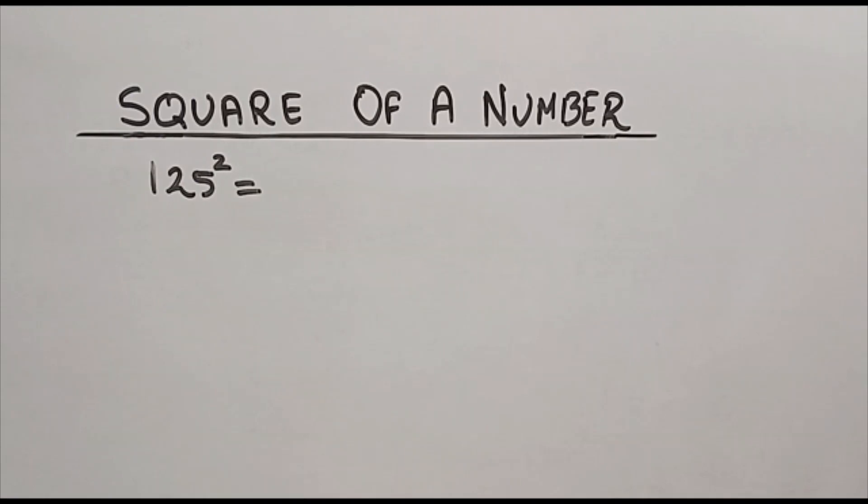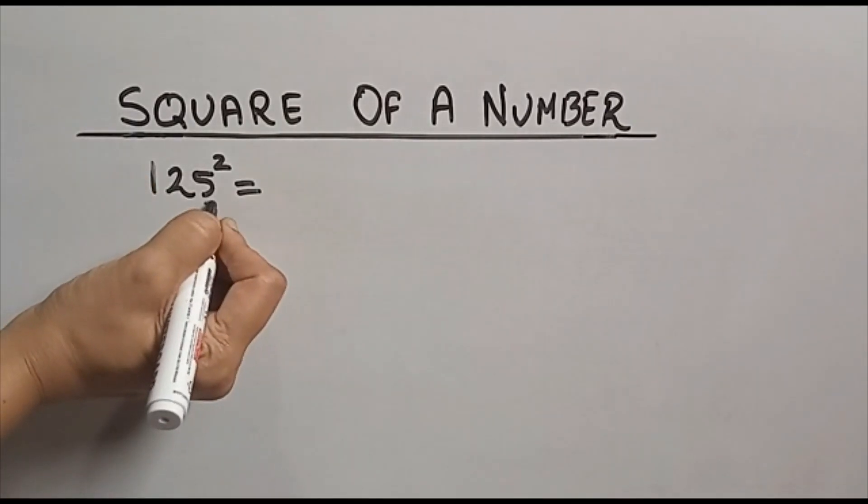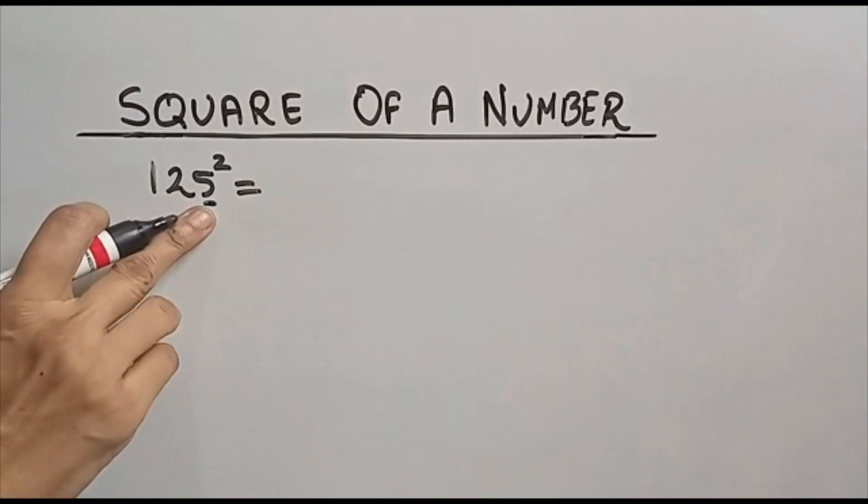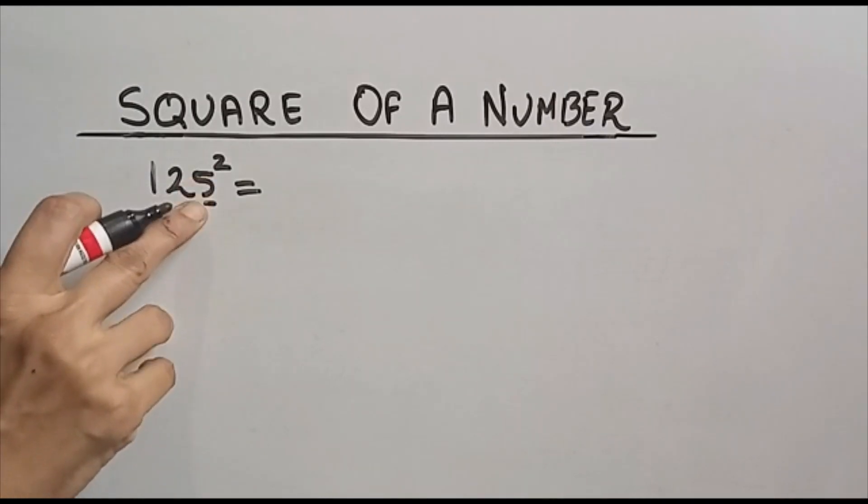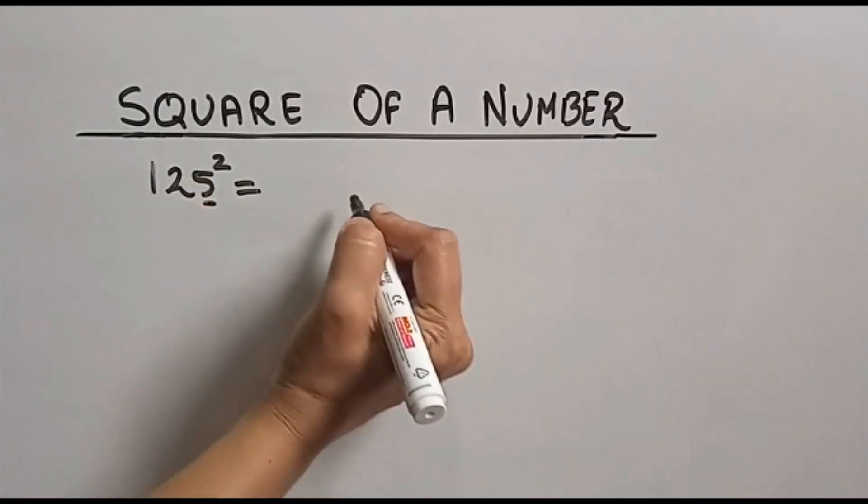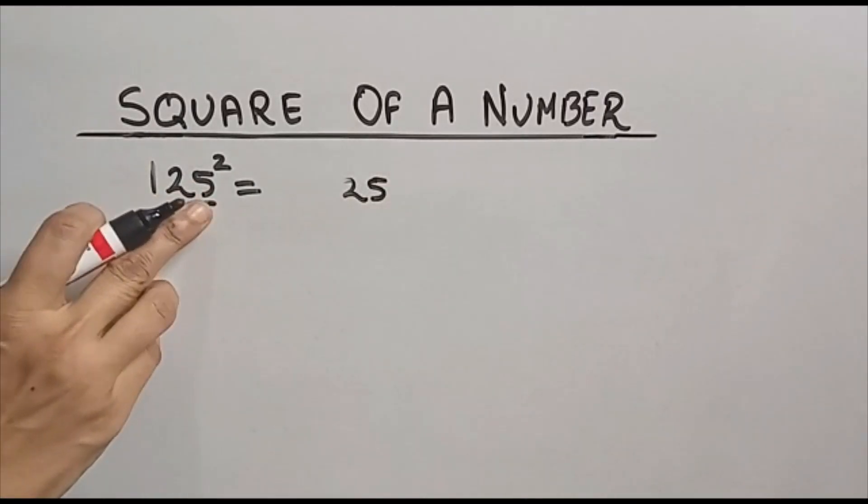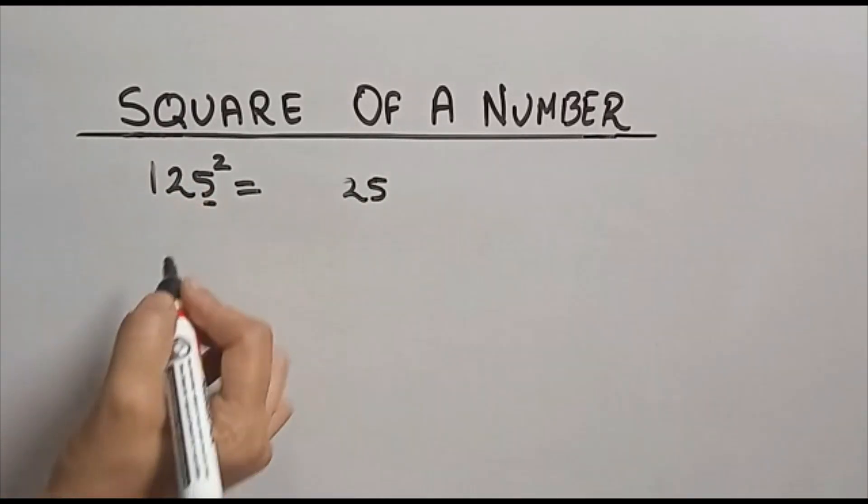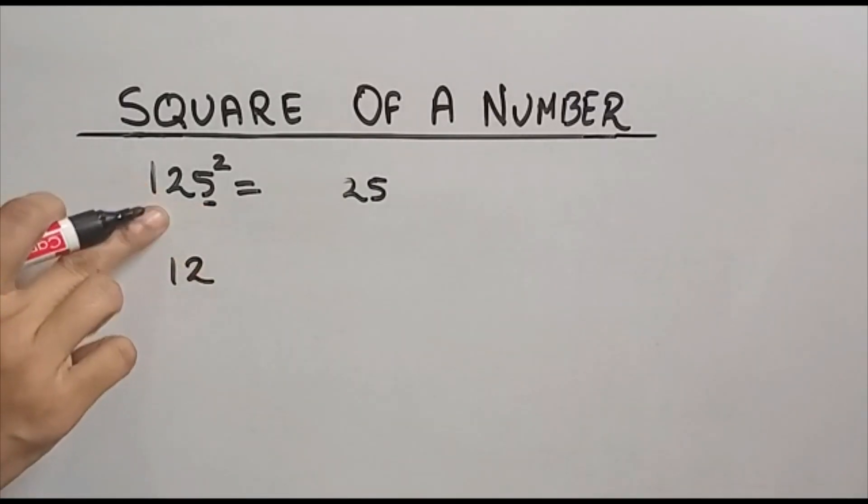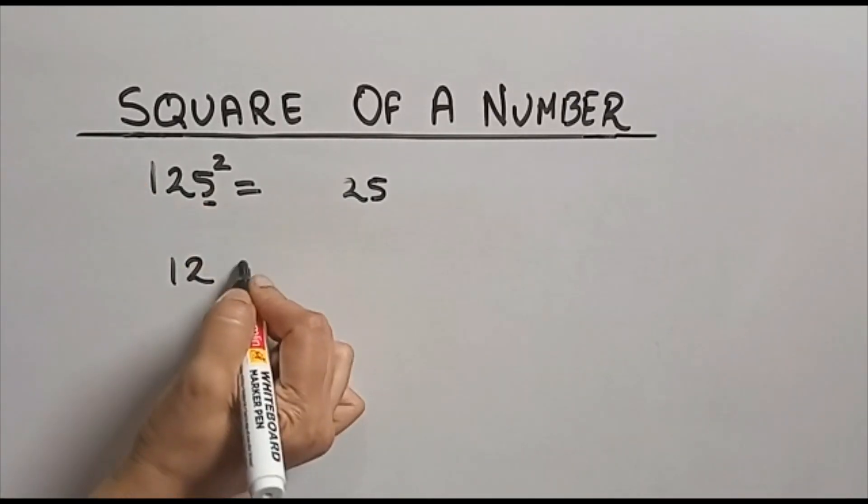Suppose you have to find square of a 3-digit natural number. What we will do here: we will first check whether this unit place is 5 or not. If this unit place is 5, we take square of this unit place which is 25. I am writing it here. Now omit this 5, what you will get? 12. Increase this 12 by 1, you will get 13.